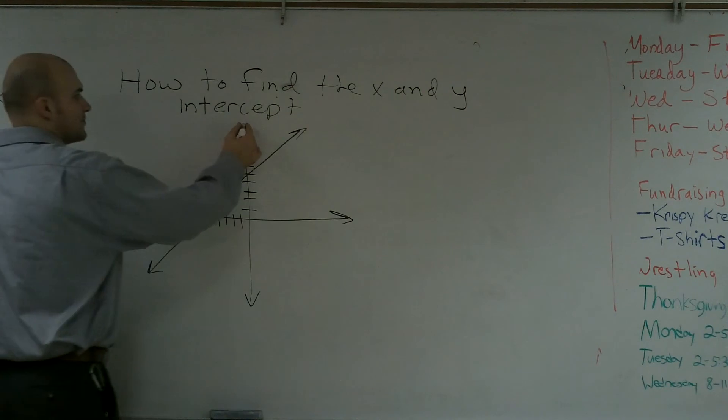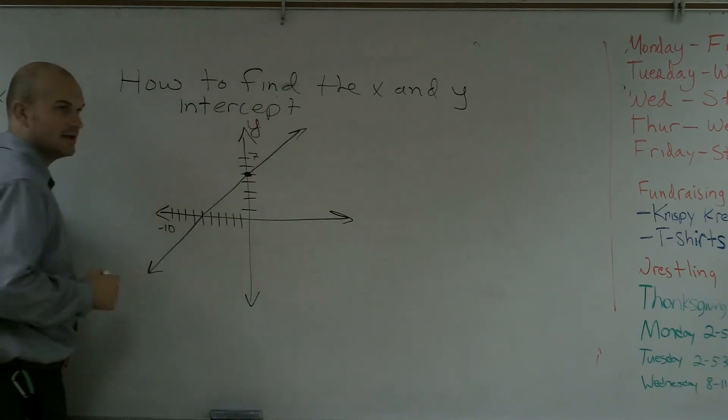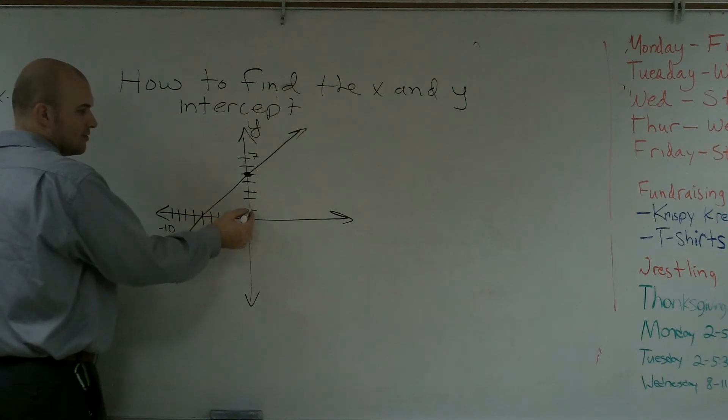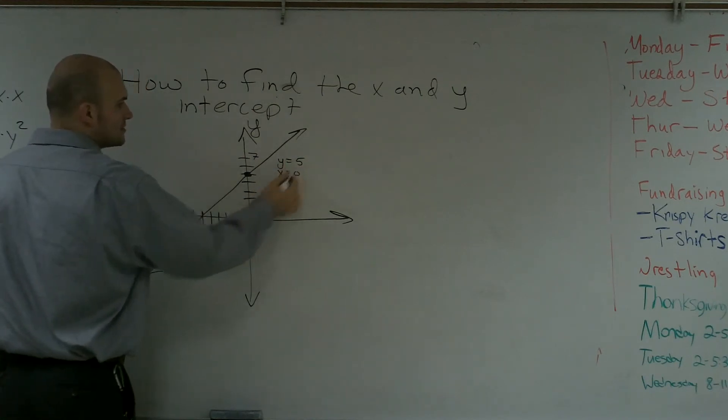Well, the y intercept is where it crosses the y axis. So it's that point right there. And you say, alright, well, y equals 1, 2, 3, 4, 5. So y equals 5, and x equals 0.